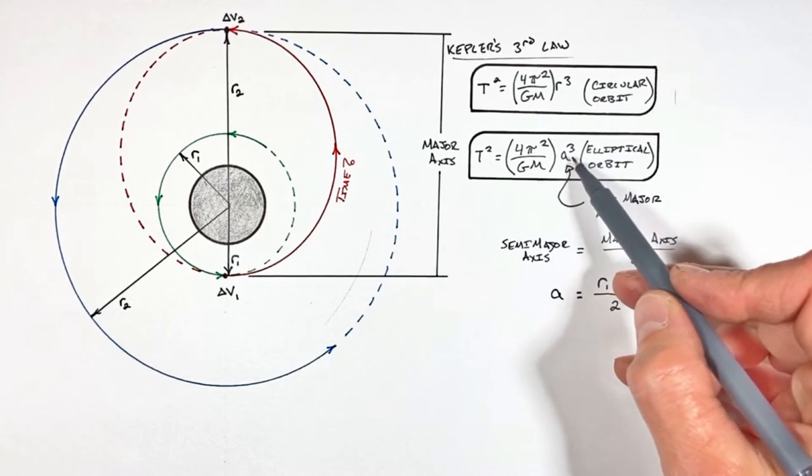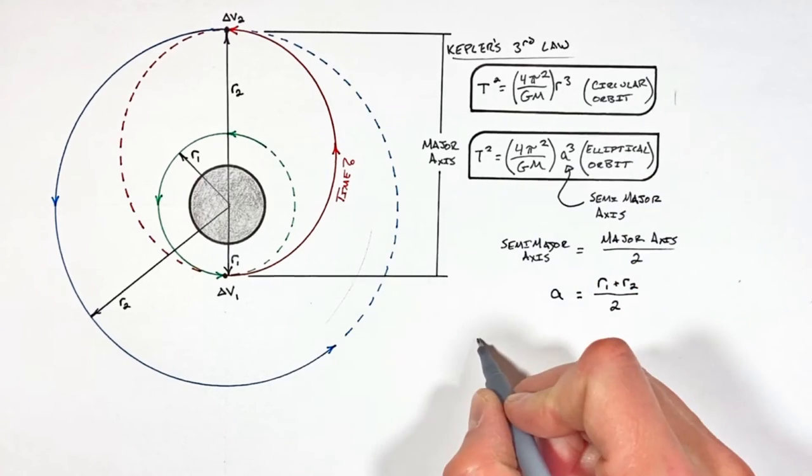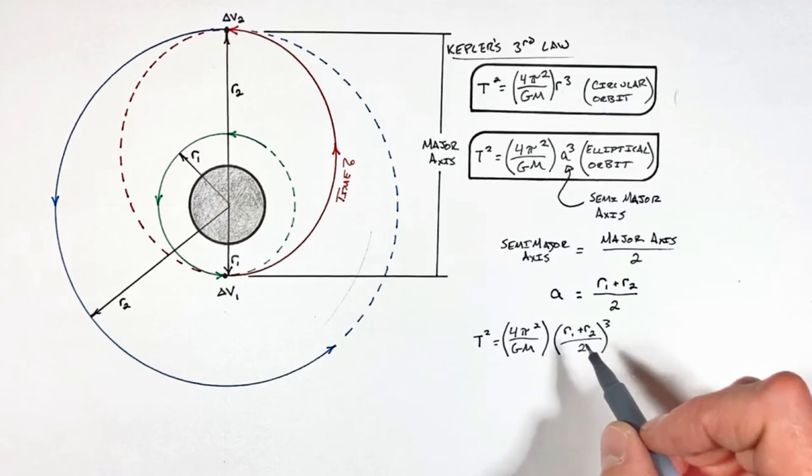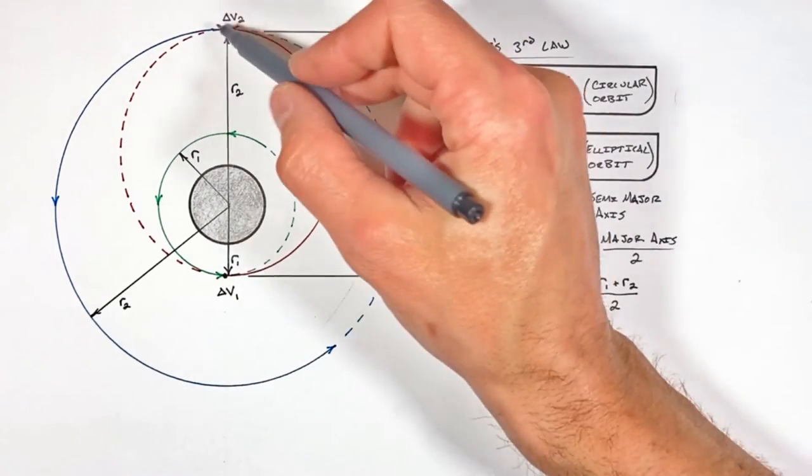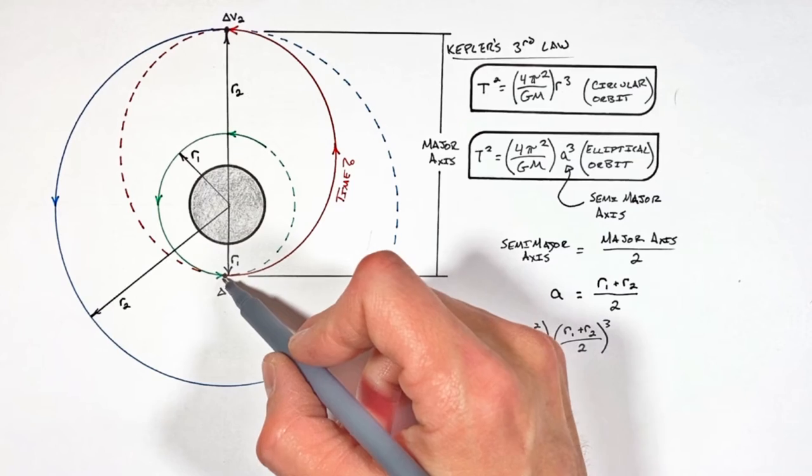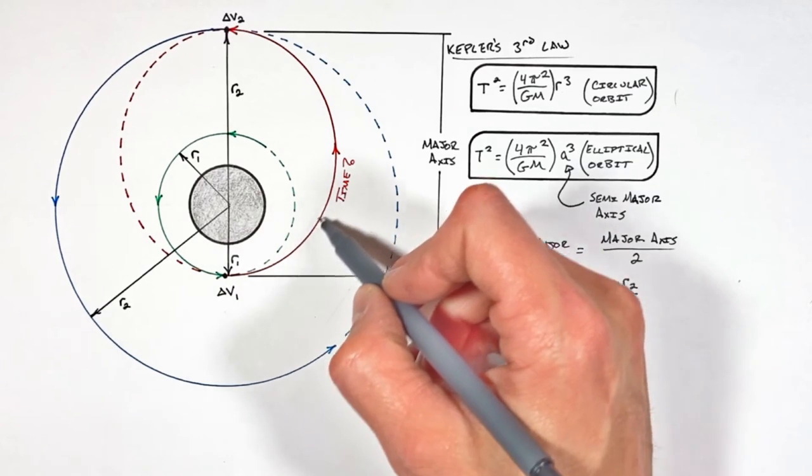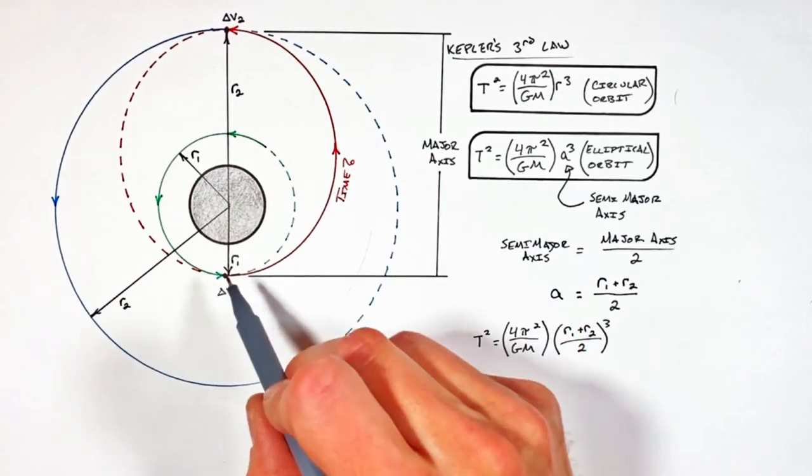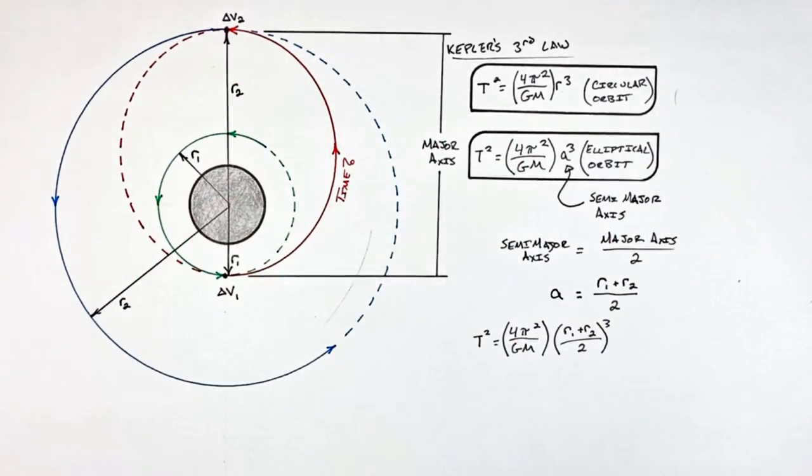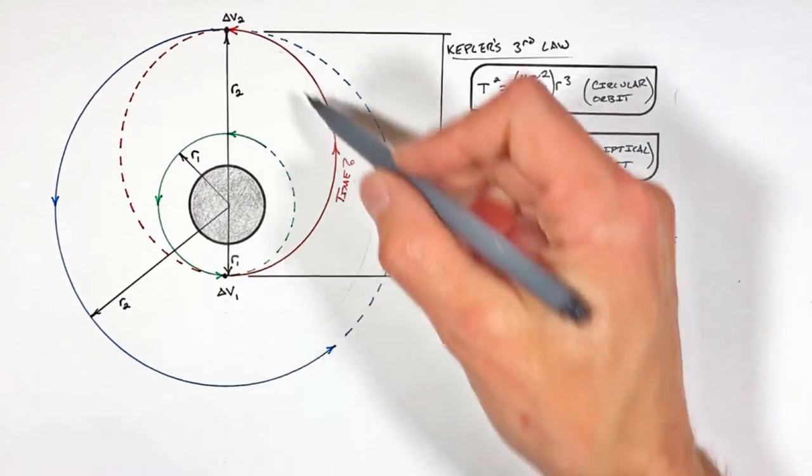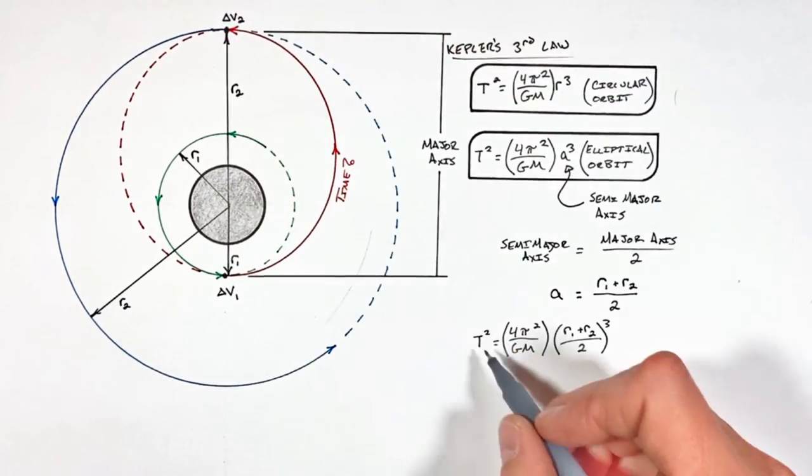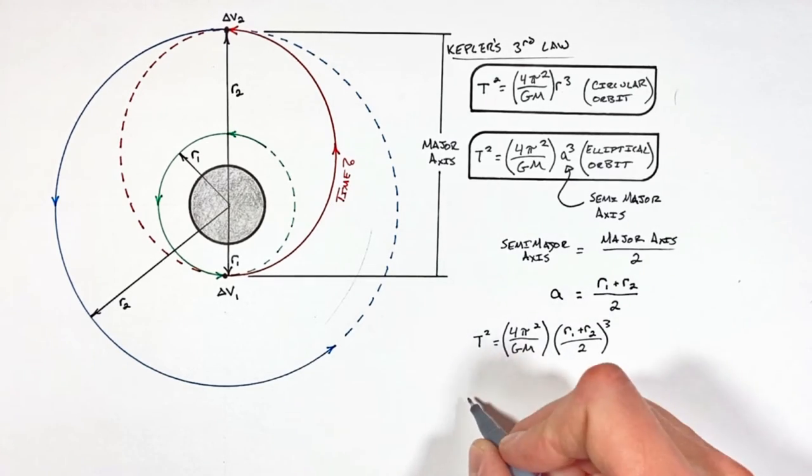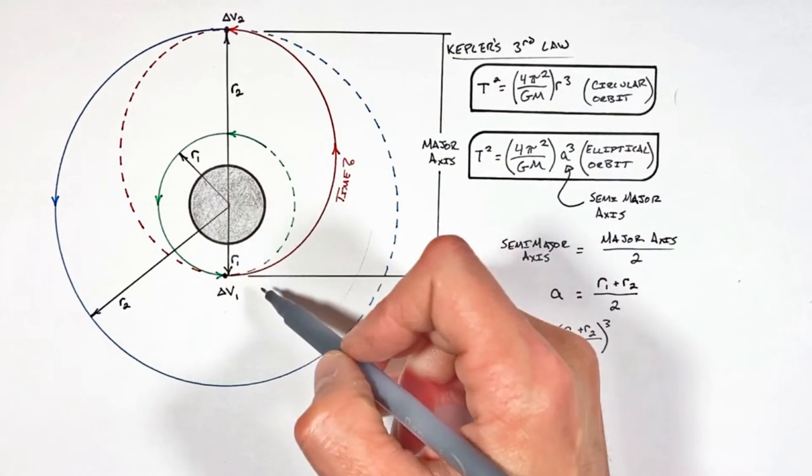So adding the two radii together then dividing them by two will give us the semi-major axis which we call A. And that can be substituted up here into Kepler's third law. Now realize this expression of Kepler's third law doesn't tell us the total time for a Hohmann transfer. What it does is it tells us the period of orbit if we were to allow the satellite to go not only up to the second burn but to continue all the way back through for one full orbit in this elliptical path. But a Hohmann transfer is simply half of that orbit. So if we can solve for this period all we need to do is take that time and divide it by two and that'll give us the total time for the Hohmann transfer.